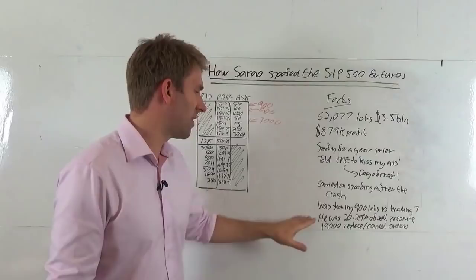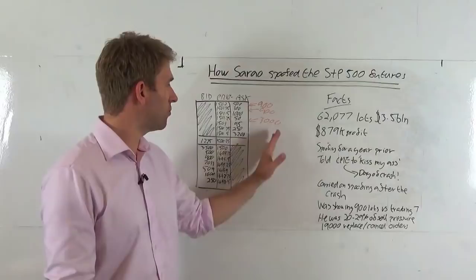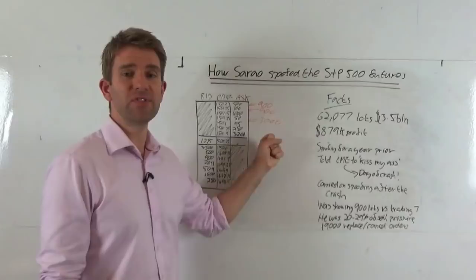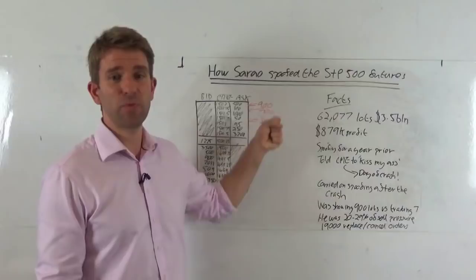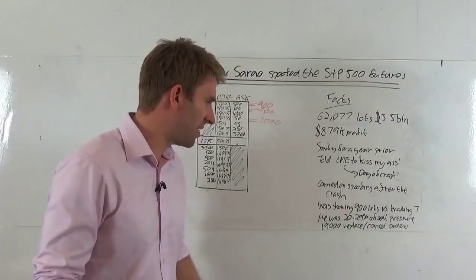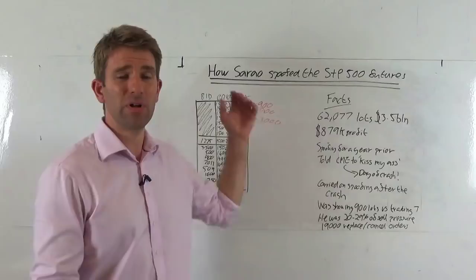At one point he was 29% of the sell pressure. And also before the crash, allegedly his spoofing orders equaled the total amount of buyers resting. So the amount of artificial offers he was putting on the ask side were the equivalent of the total amount of buyers stacked up. So that's how two-to-one sided it was.